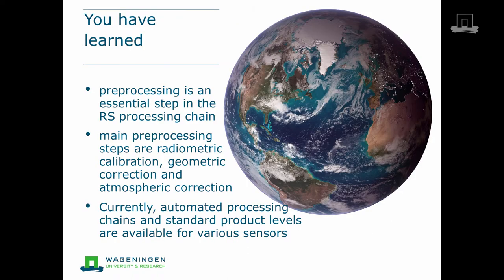In this clip, you have learned the importance of image preprocessing in the remote sensing processing chain, improving the quality of the images for further analysis. The radiometric calibration, geometric and atmospheric correction have been discussed as main processing steps. Finally, several product levels have been discussed.